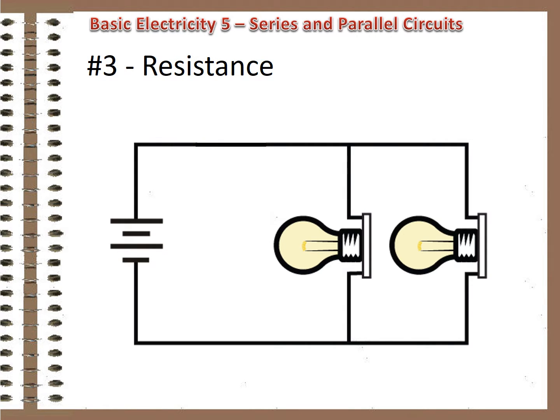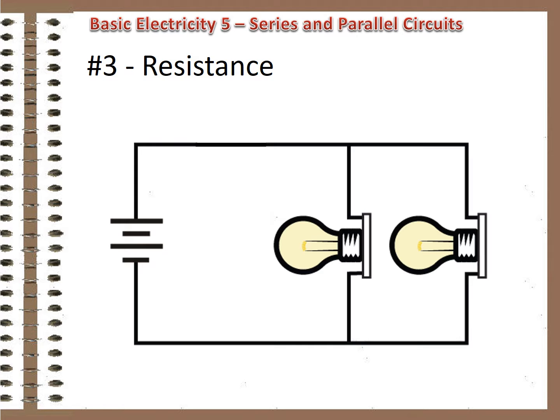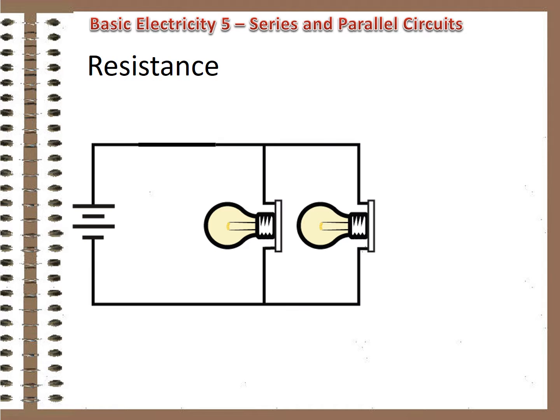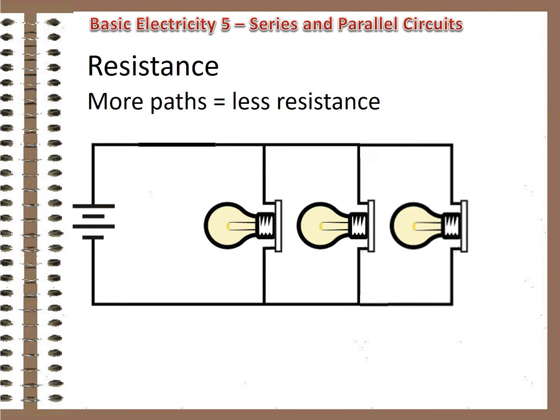The big winner is resistance. Do you think devices in parallel increase or decrease the resistance of the circuit? Remember the traffic jam. Every time you add a parallel leg to a circuit, the total resistance goes down because there's another path for the current to follow. Even though that path may have some resistance, it still provides another route, so the total resistance drops.